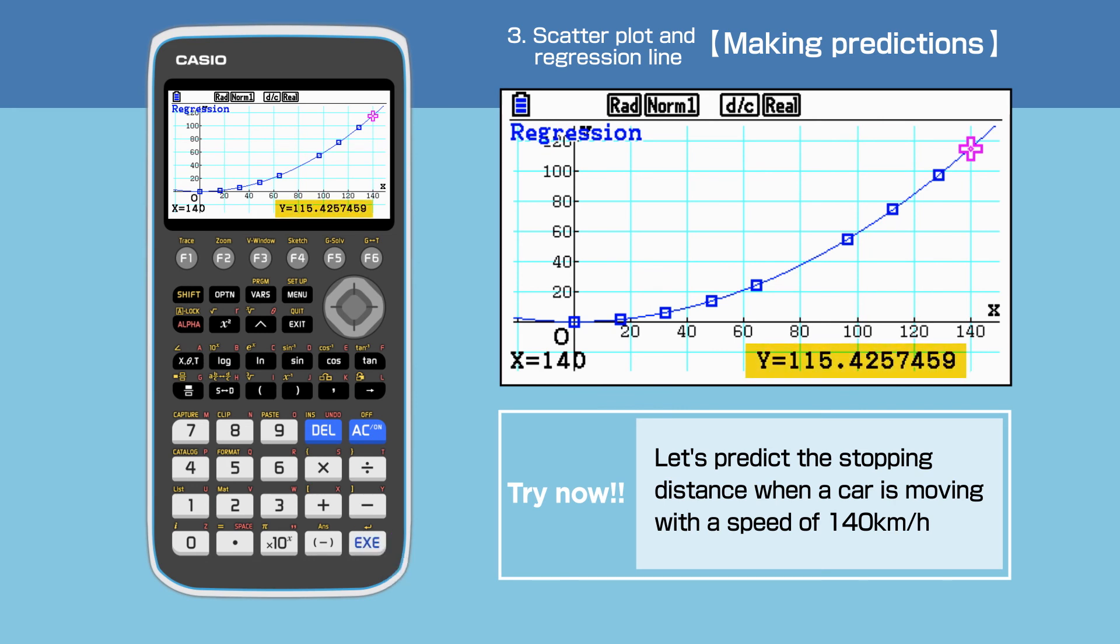The prediction of the stopping distance is 115 meters when a car is moving with a speed of 140 km per hour.